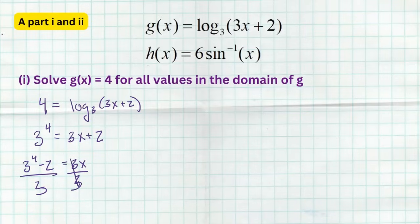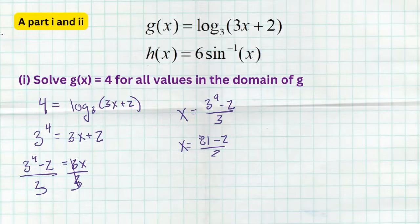We get the final answer (3⁴ − 2) / 3. Now 3 to the fourth is 81, so we have (81 − 2) / 3 = 79/3. Our final answer is 79 thirds. Nice and simple to solve a logarithmic function.